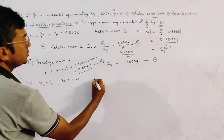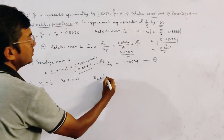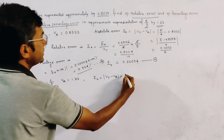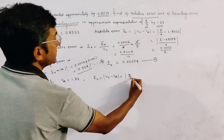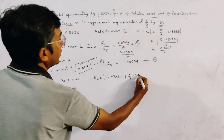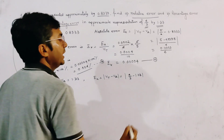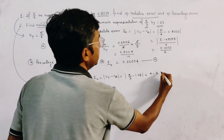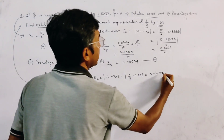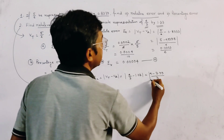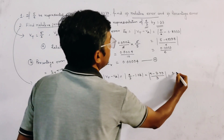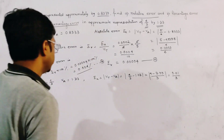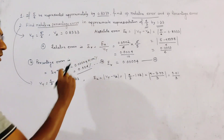We first find the absolute error. This is equal to |4/3 − 1.33|, which gives (4 − 3.99)/3, and this is equal to 0.01/3. This is the absolute error.